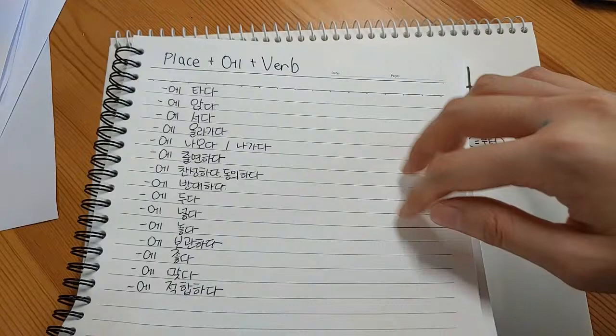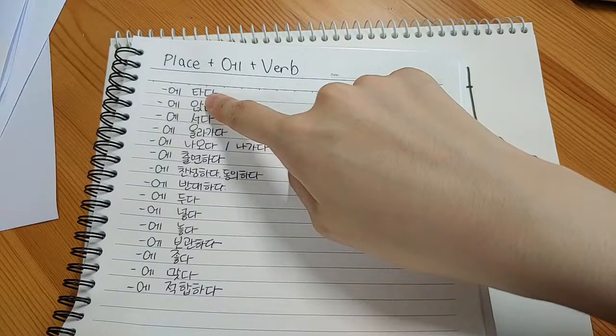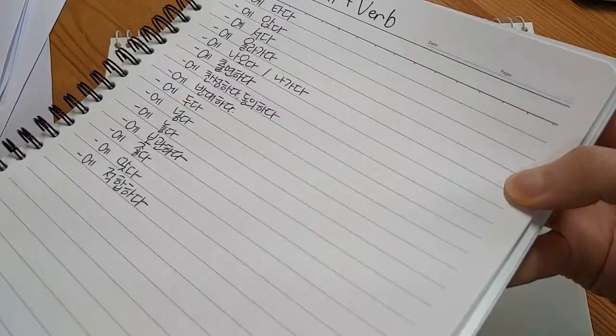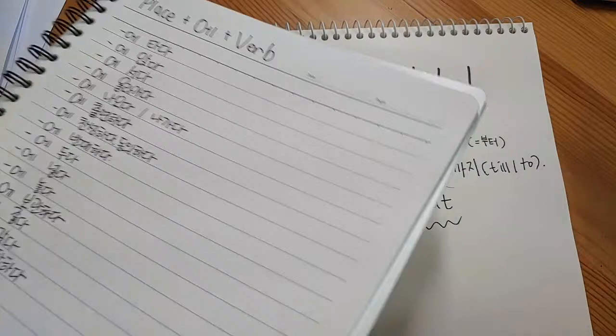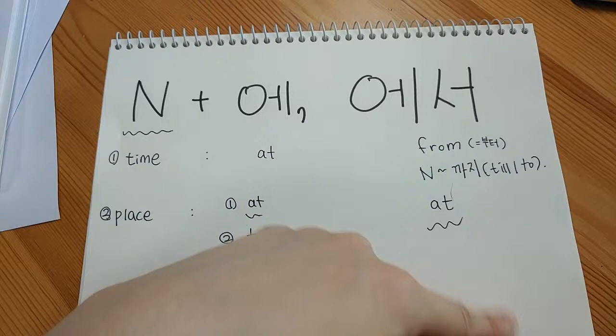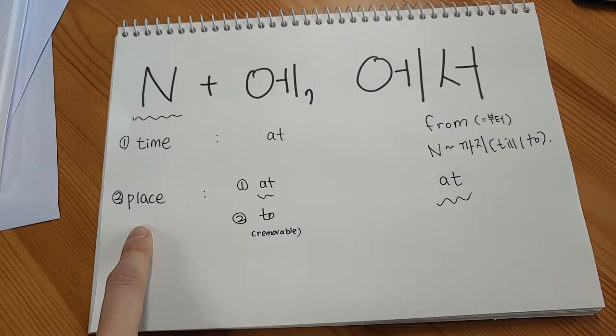There are actually more verbs that can follow the 에 particle when placed after a place noun — we're going to do a separate video or live class to focus on those. 에서 can also be placed after a place noun meaning 'at,' and 에 can mean 'to' — for example, 학교에 가요 means 'I go to school,' and 에 is usually removable.